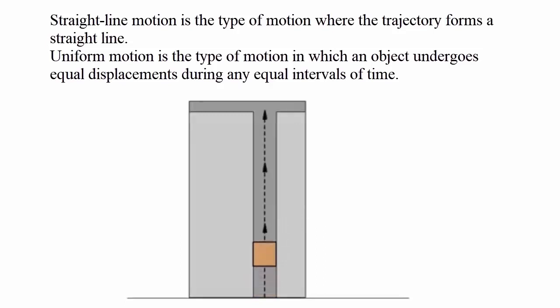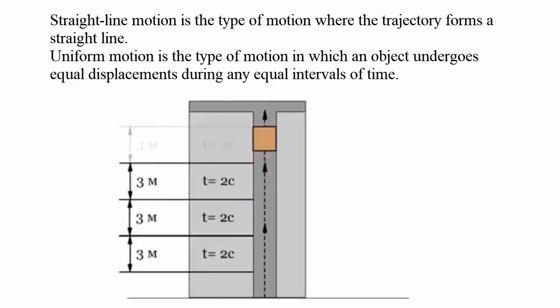Motion is called uniform if, during any equal time intervals, an object undergoes equal displacements. For instance, elevator motion is uniform.